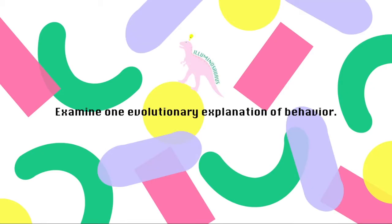Hi, it's Elewina Saras and today we will be talking about one evolutionary explanation of disgust. The learning outcome we will tackle today is: examine one evolutionary explanation of behavior. The command term 'examine' tells us to carefully scrutinize an argument or theory and see how it explains something and perhaps why. This is an ERQ command term which means we need to have analysis and application in our essay.